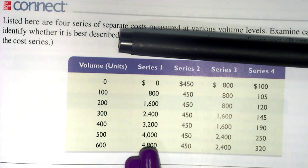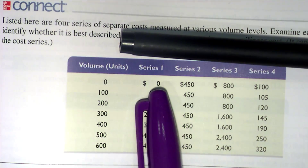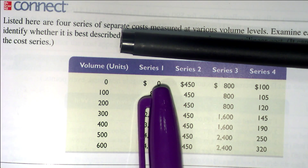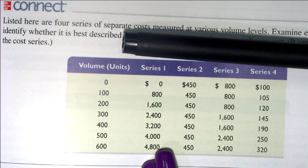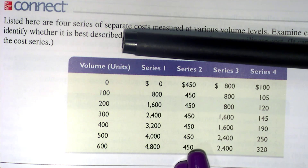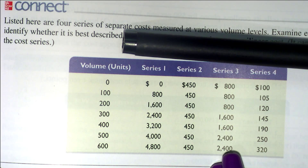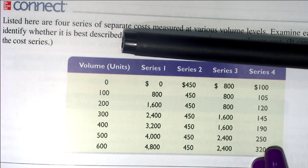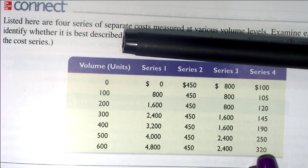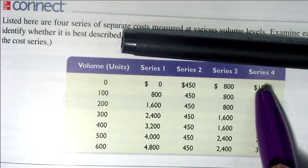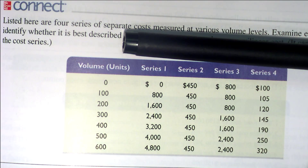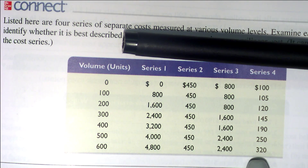It's variable. At zero volume there's zero cost, and true variable costs start right there at the intersection of the x and y axis. Series two? Obviously fixed — it's the same total amount for each volume level. Series three? Stepwise. And series four? Curvilinear. Actually, a better option would have been mixed curvilinear, because at volume level zero there is a cost — so this is a mixed curvilinear cost.